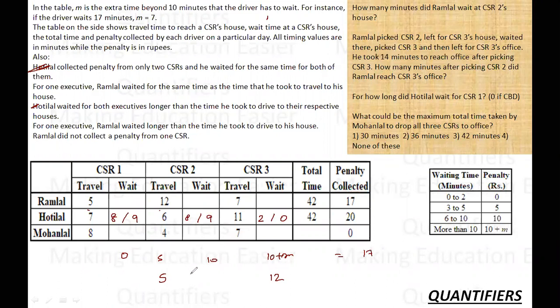So in any case, he must be waiting for 5 minutes somewhere. So these are the two wait times with us. Let's see how we can allocate. And one executive, Ramlal waited longer than the time he took to drive to his house. So this cannot be 12. Because in that case, fine here will be 13 at least, and that is not a possible scenario. So this is out. He waited longer time. Now can it be above 5? If I am keeping it above 5, then the wait time is either 6 or 7. Then he must be collecting 10 rupees from here and 10 rupees from here. And then he has to collect 12 rupees from here and 7 rupees from here, which is not possible because the only feasibility was 5 and 12.